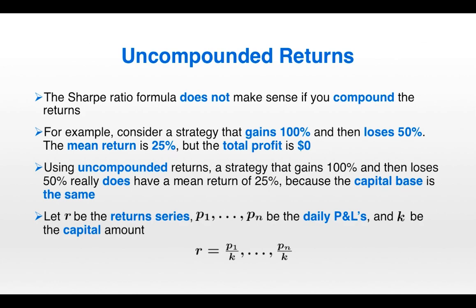Let's walk through an example: a strategy gains 100% (going from $100 to $200) and then loses 50% of that $200, back down to $100. The mean return is 25% — the mean of positive 100 and negative 50 — but the total profit is $0. If you're using uncompounded returns, the strategy that gains 100% and then loses 50% really does have a mean return of 25%, because the capital base stays the same: you gain 100% on the initial $100 up to $200, then lose 50% on that same initial $100 down to $150. So the mean return really is positive 25%, and using compounded returns for the Sharpe ratio can give you an inaccurate number.